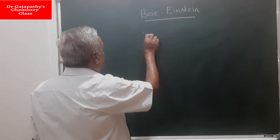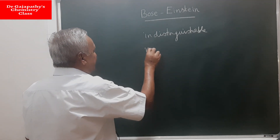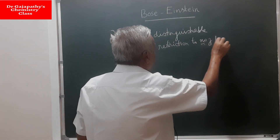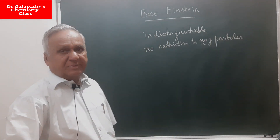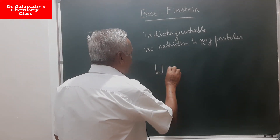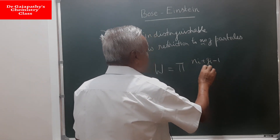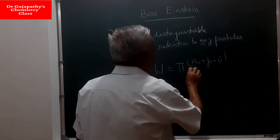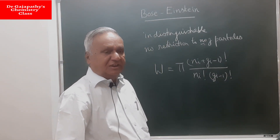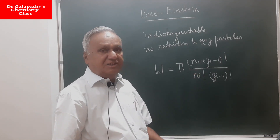So the key conditions are: indistinguishable particles, and no restriction on the number of particles at any level. Based on these conditions, they proposed an equation for the thermodynamic probability W. According to Bose-Einstein, W equals the product over all levels of (Ni + Gi − 1)! divided by Ni! times (Gi − 1)!. Here Ni is the number of particles at any level and Gi is the degeneracy at that level.